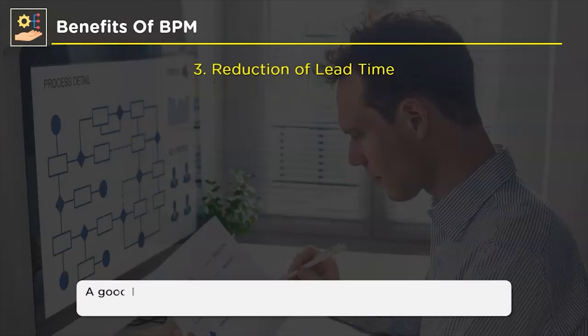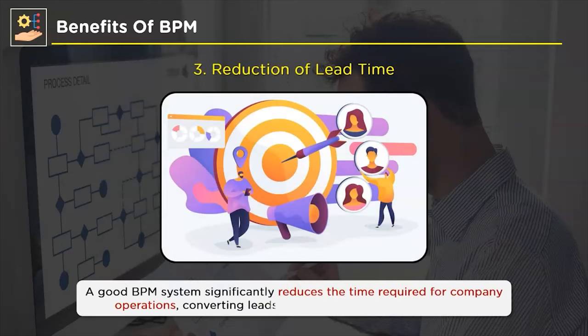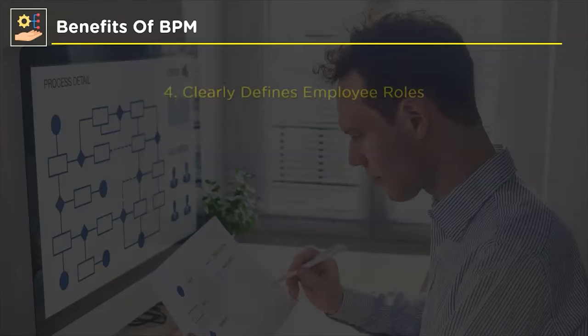The next benefit of BPM is reduced lead time. By controlling all business processes and monitoring each one, BPM increases the accuracy and speed of operations. For example, a loan application process that could have taken months can now be finished within weeks due to controlled process handling by BPM. This increased efficiency allows banks to convert leads into potential customers quickly, making it one of the most significant benefits BPM has to offer.